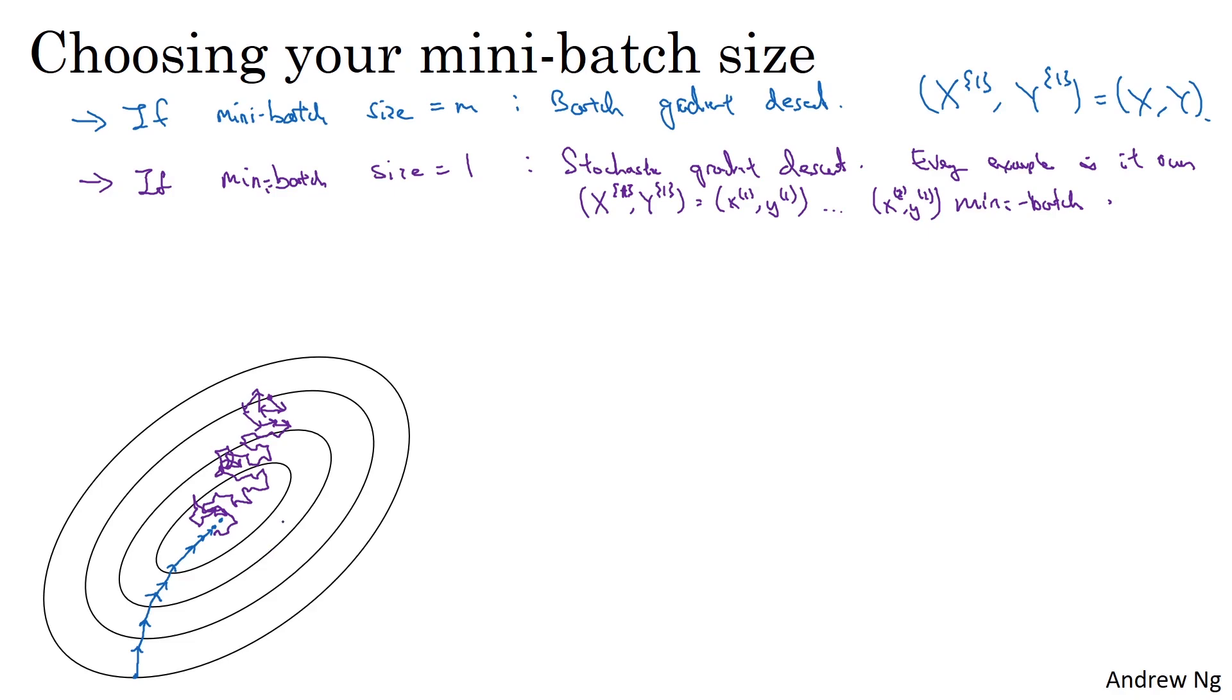And stochastic gradient descent won't ever converge. You'll always just oscillate and wander around the region of the minimum, but it won't ever just head to the minimum and stay there. In practice, the mini-batch size you use will be somewhere in between, somewhere between 1 and m.